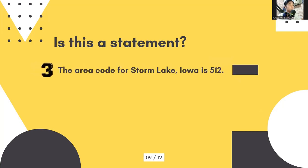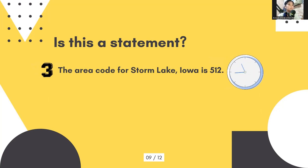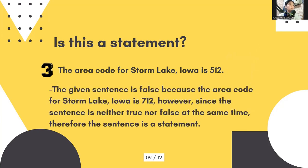Number three: the area code for Storm Lake, Iowa is 521. The given sentence is false because the area code for Storm Lake, Iowa is 712. However, since the sentence is made neither true nor false at the same time, therefore the sentence is a statement.